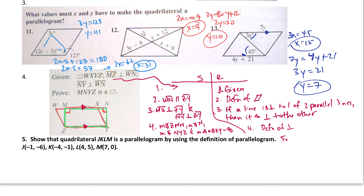So now I'm pretty much done. Step 5: all of these angles are congruent, which means MNYZ is a parallelogram, and the reason is opposite angles congruent. I did skip one little step — you can put in a substitution step to show that they're all congruent to 90 degrees.